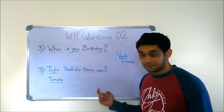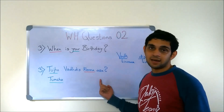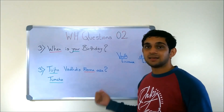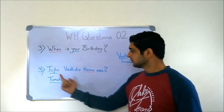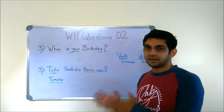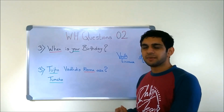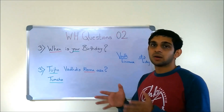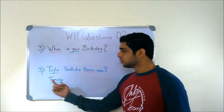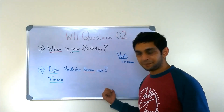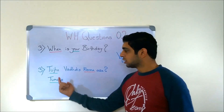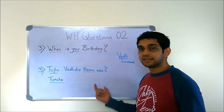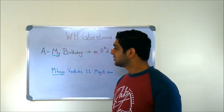KENNA ASA — here ASA is not strictly a must, but the sentence doesn't look complete without it. So: TUZHO VAR DIS KENNA ASA, or TUMCHO VAR DIS KENNA, or TUMCHO VAR DIS KENNA ASA.